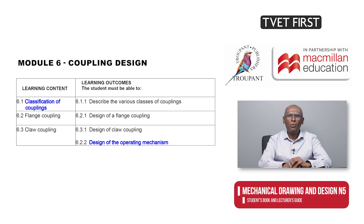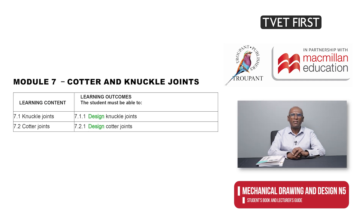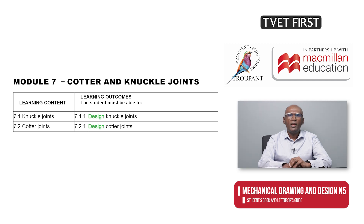Both the former and new Module 6 deal with the design of couplings, although the classification of couplings and the operating mechanism of claw couplings have been added. The new Module 7 covers the old Modules 7 and 8. These originally specified the design of the eye, fork and pin of a knuckle joint, as well as the solid or pierced rods and the cotter of a cotter joint. The new module summarizes this as simply the design of the two joints.